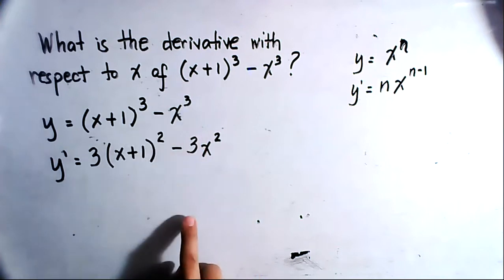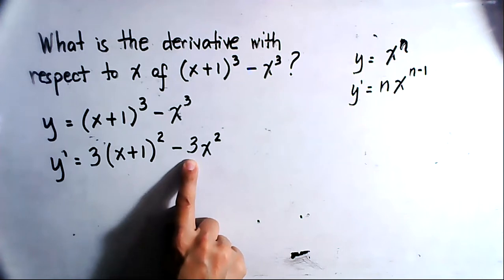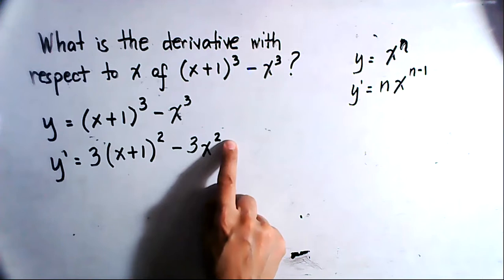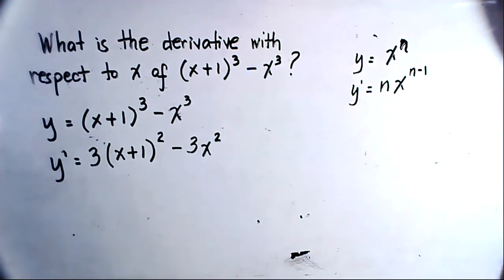And then for x cubed, we use 3 as the numerical coefficient, and then you have x raised to n minus 1, and that is equal to 2.